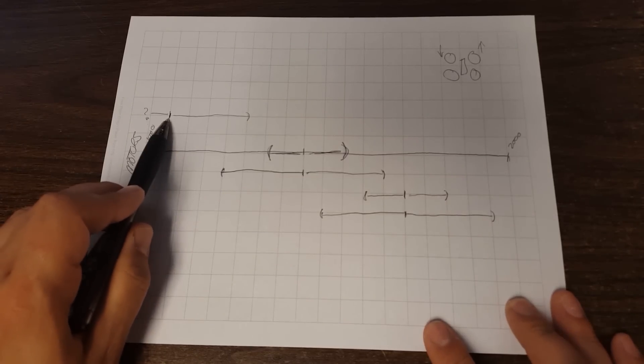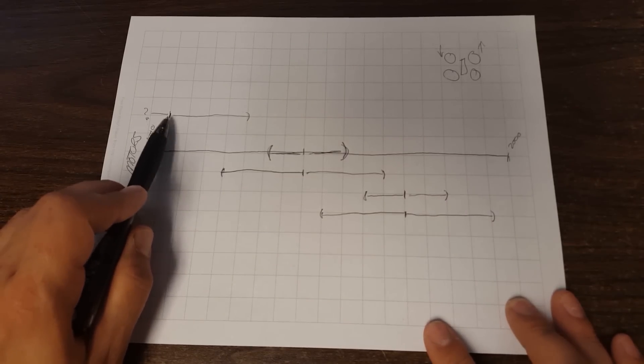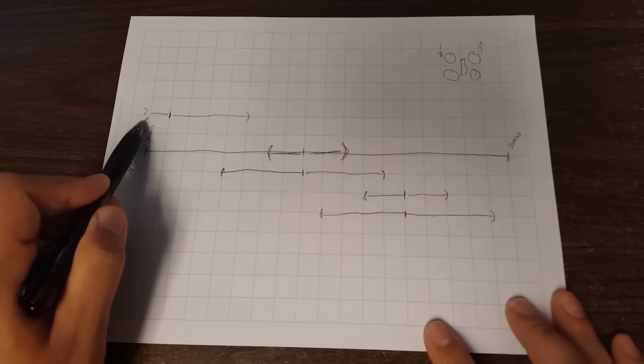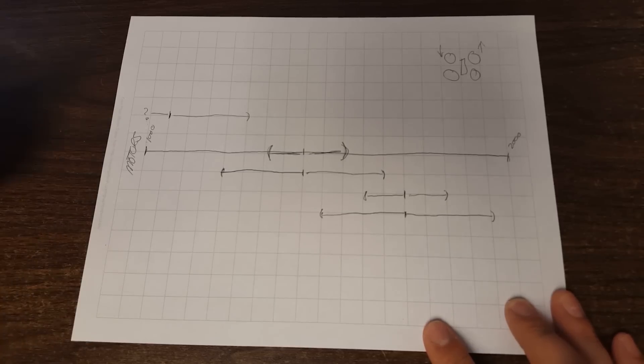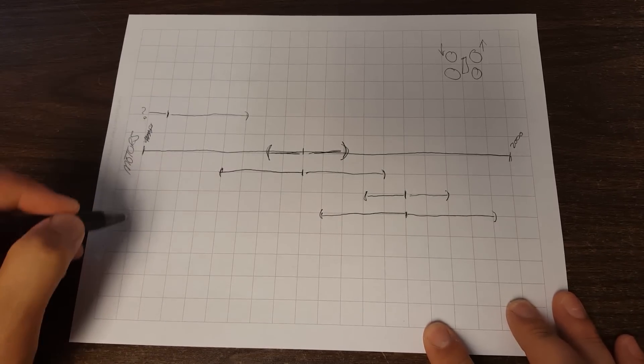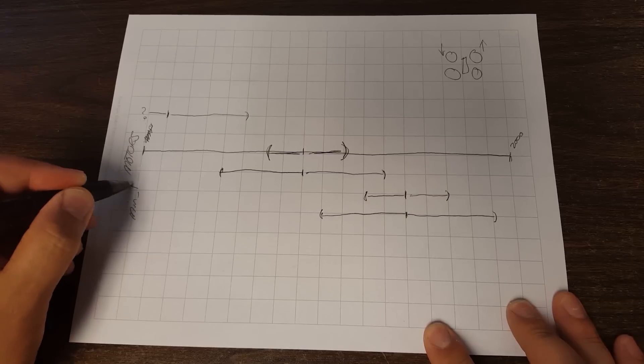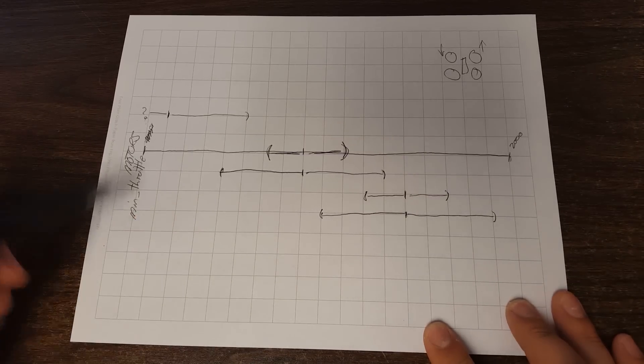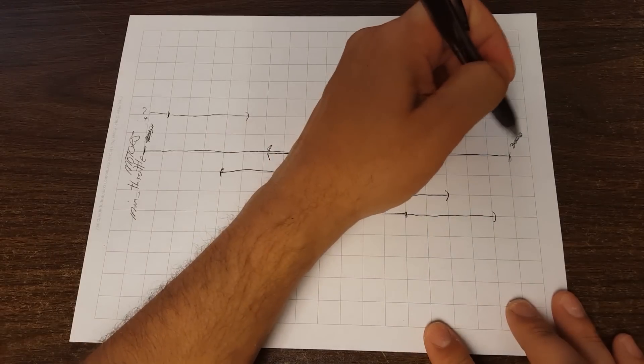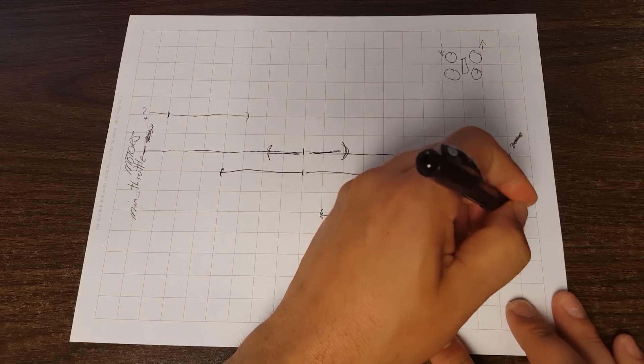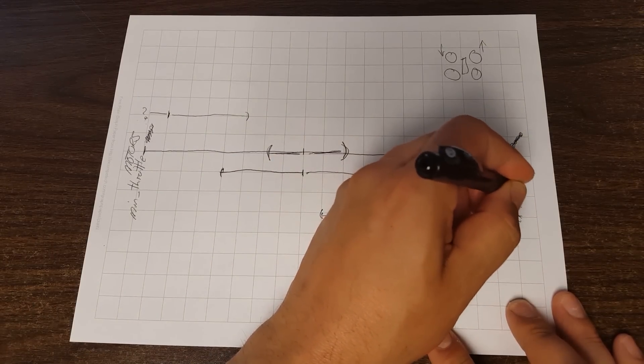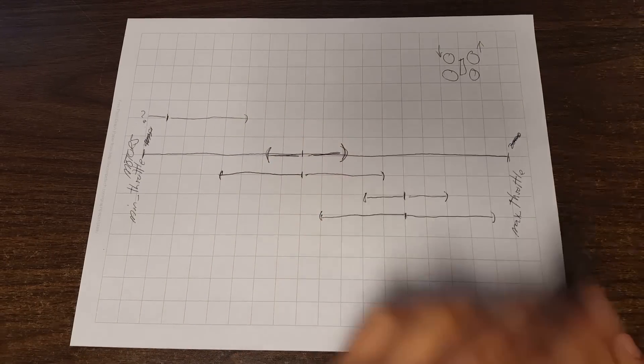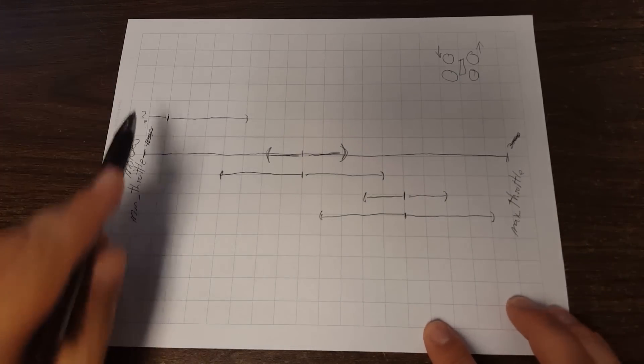You see, if your set point, as determined by your throttle stick, is low enough, the motors can't spin any slower because they've hit min throttle. So this should really, let's change that. Let's make that be min throttle. There you go. This should really be max throttle then, shouldn't it? Now my drawing is perfect.